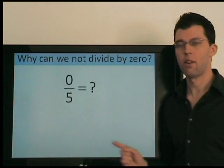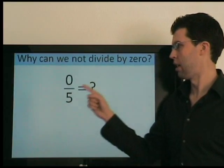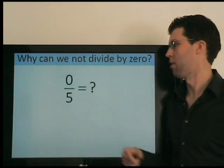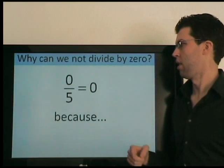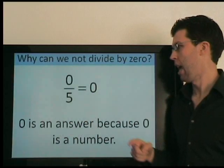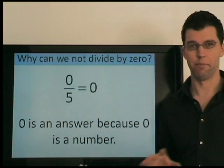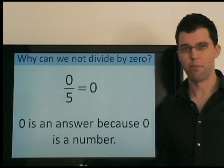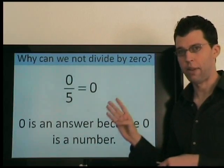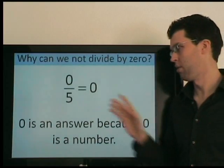But what about 0 divided by 5? What's the answer here? Well, what number times 5 equals 0? Well, 0. 0 times 5 equals 0. And it's important to recognize here that 0 is an answer. 0 is a number, just like any other number. So this is an actual answer. Undefined means there is no answer. So 0 is an answer.